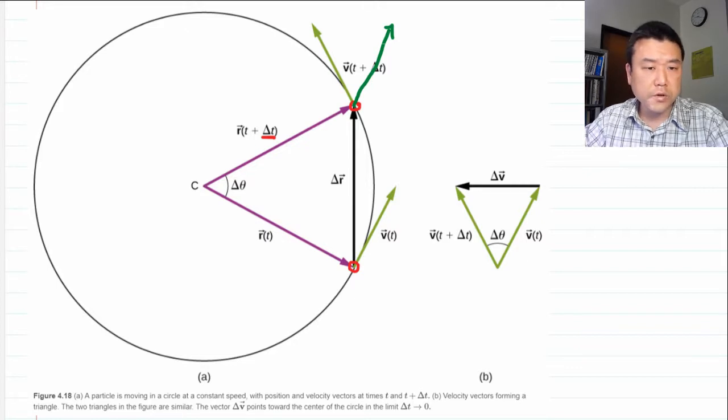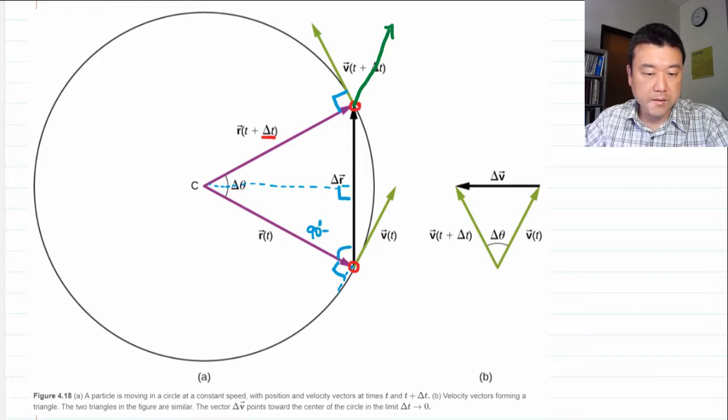And through geometry, you can figure out a few things. So the tangent direction to the circle is perpendicular to the radius. And what that tells me is, since you have a 90-degree angle here, this is 90 degrees minus delta theta over 2, because this is delta theta over 2.